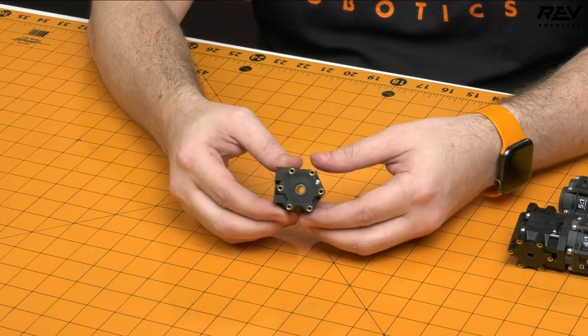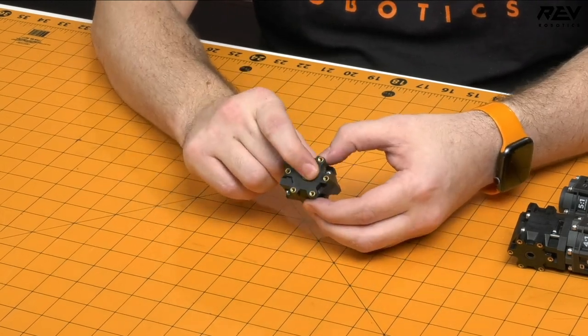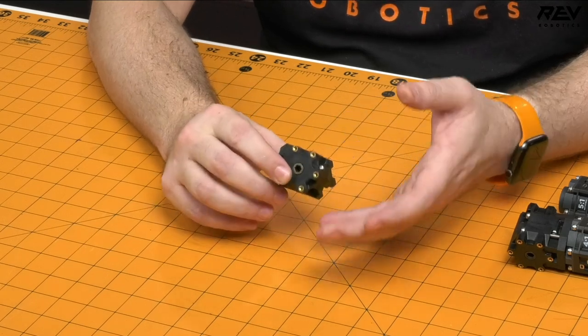The gearbox is actually designed pretty tough. It's got a ball bearing supported output shaft so this thing can pretty much take anything that you can throw at it.